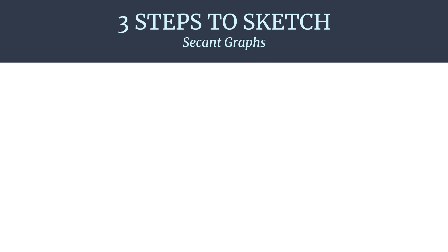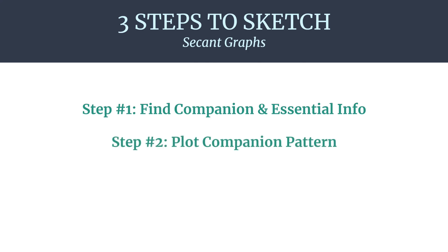So here are three steps to sketch for secant graphs. First, we're going to find the companion equation. So that'll be the cosine version of the equation and all the essential info for that. So those steps will be all the same as finding cosine graphs. Step two, we'll plot that companion pattern. So we'll essentially be graphing the cosine companion graph.